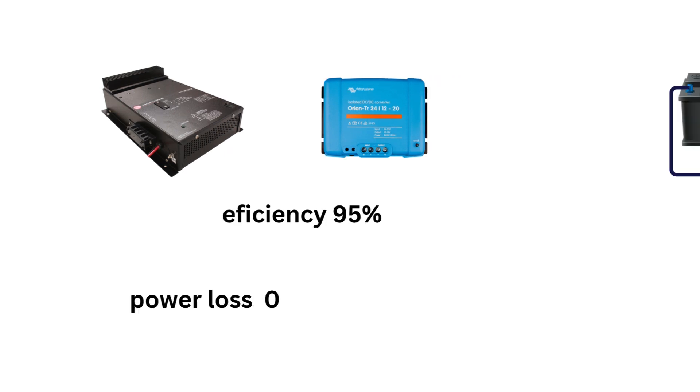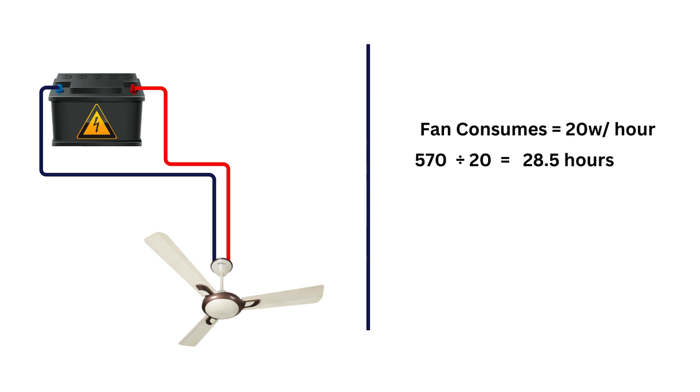Here is a calculation. DC fan uses 20 watts. 570 watt-hours battery capacity divided by 20 watts equals 28.5 hours of run time. If we hook our DC fan to our battery via an inverter,